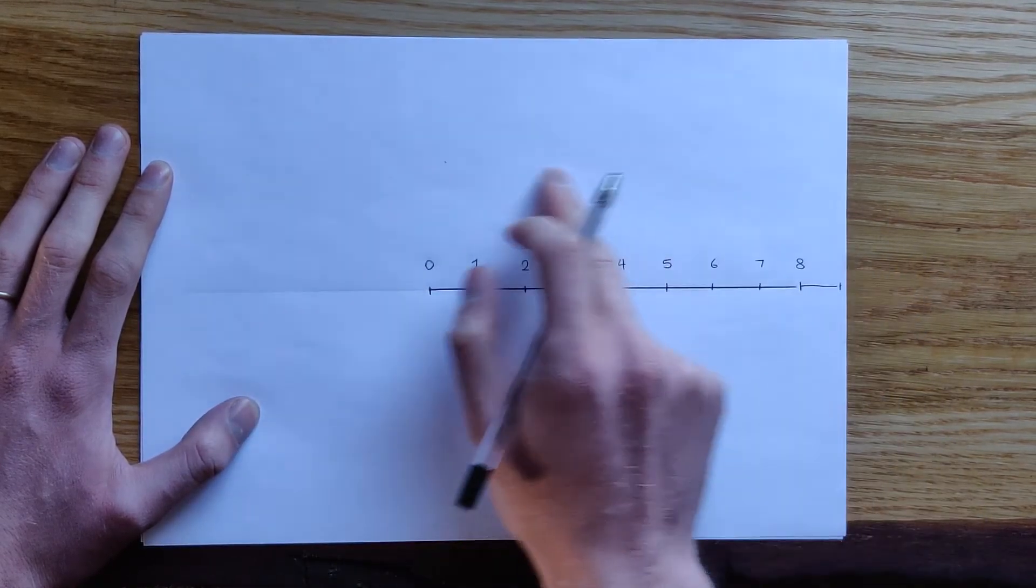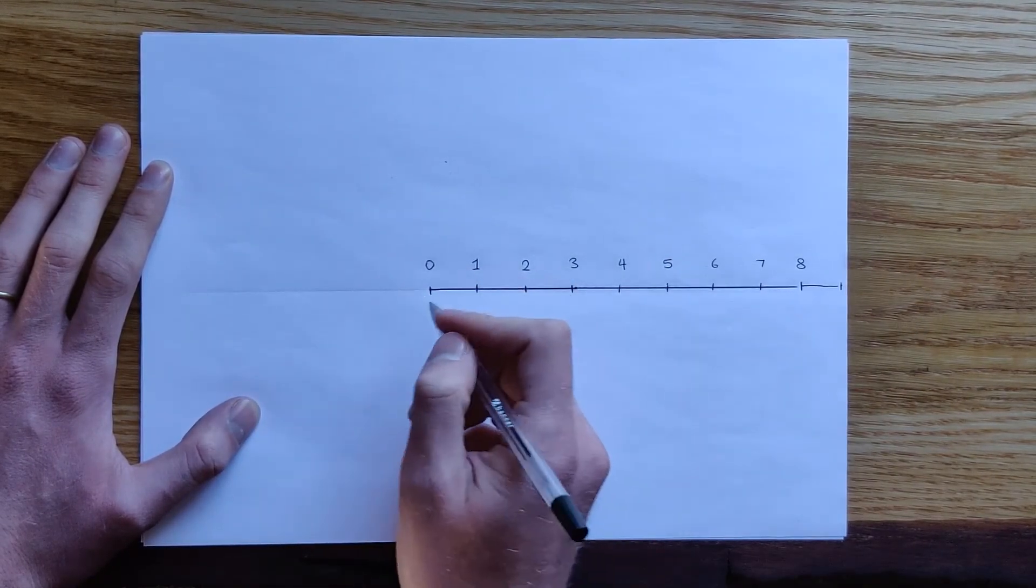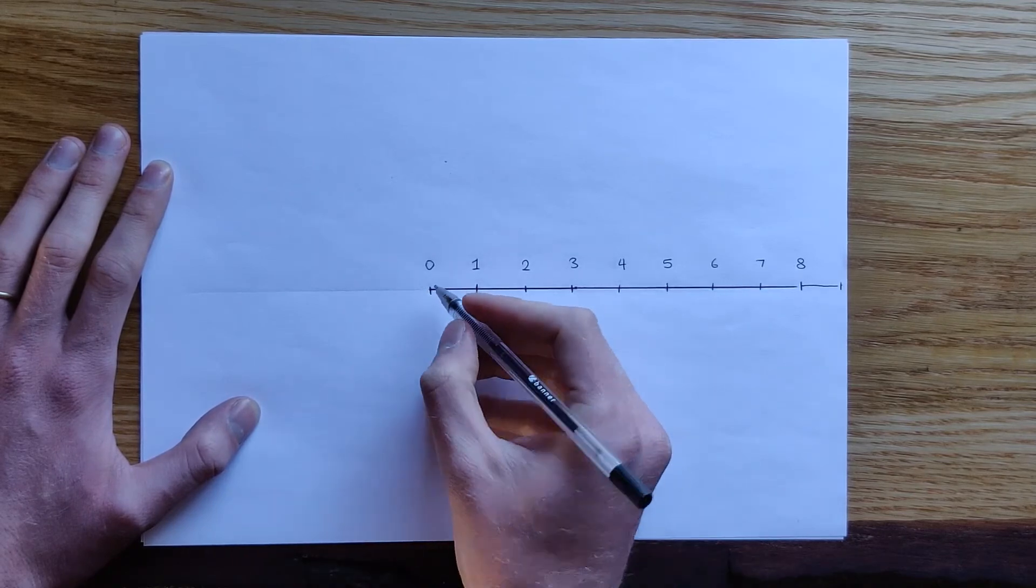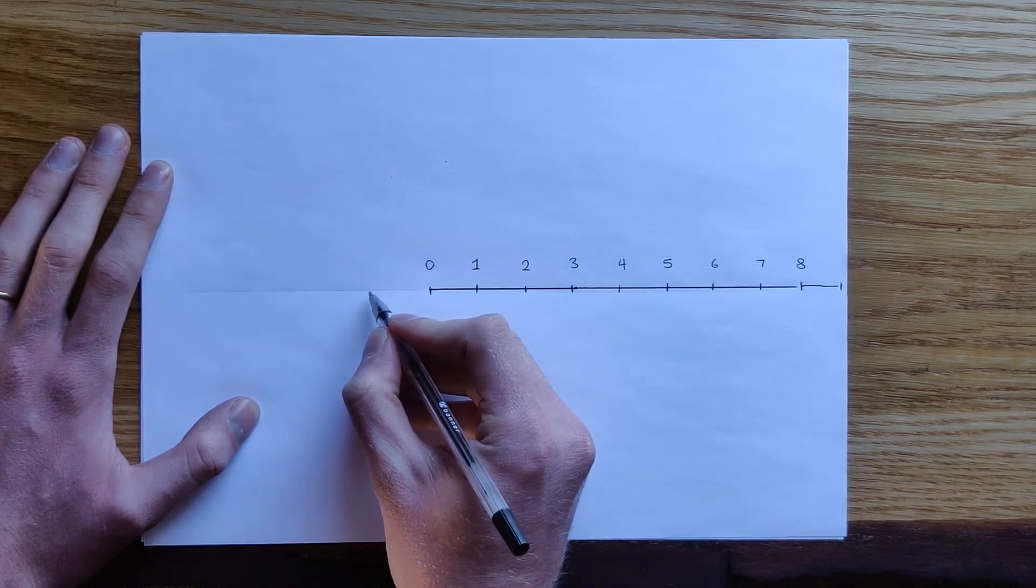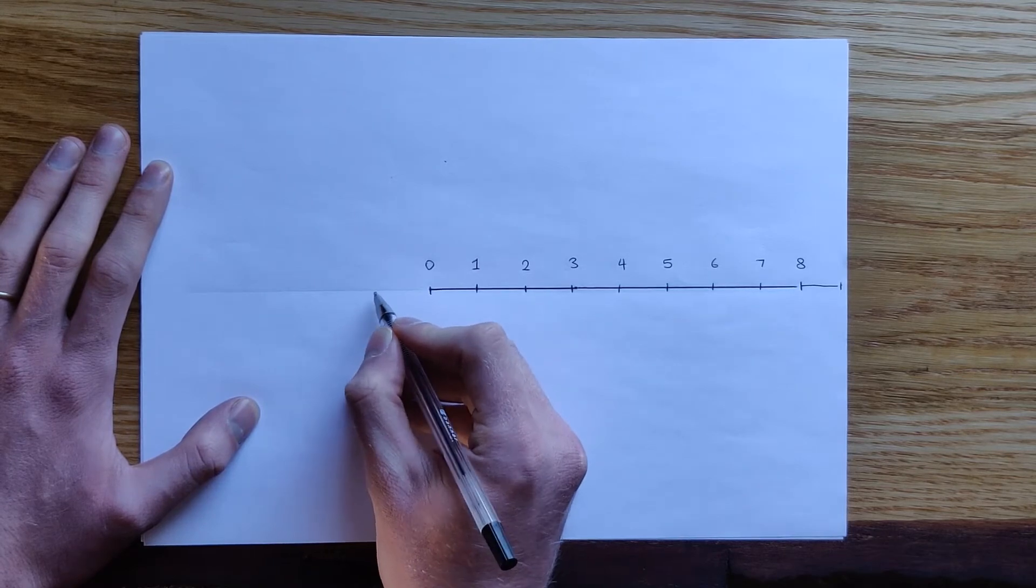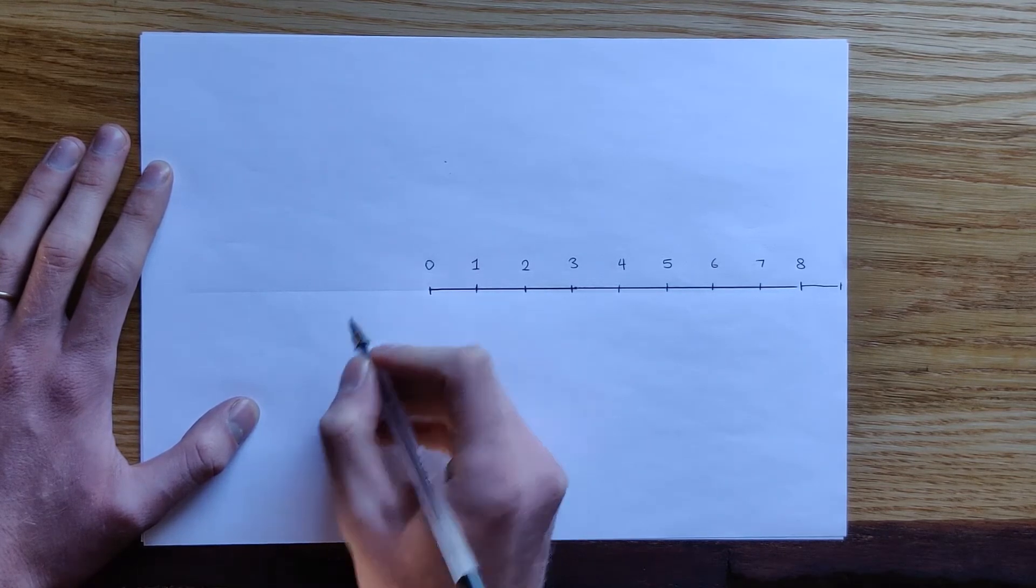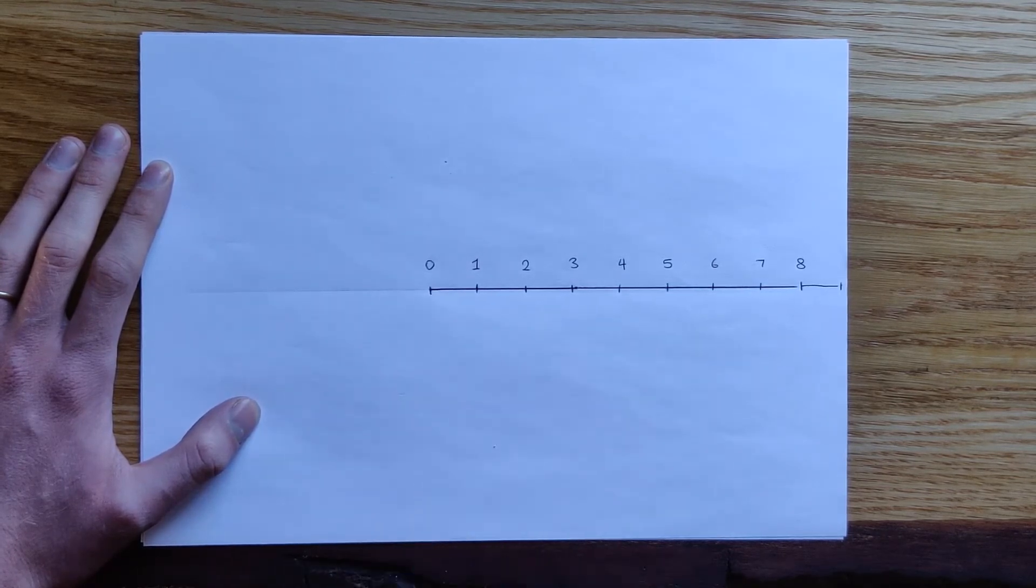To show this on a number line, what we do is we could extend it further past zero. And if you've got less than zero, as I said, we show this using negative numbers. So let's have a go at seeing what that would look like.